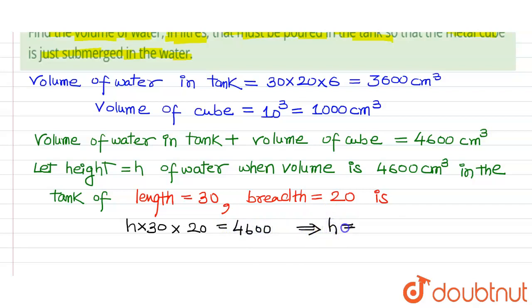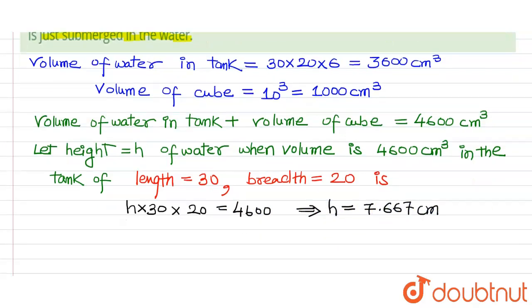So, we have h equals 7.667 centimeter when volume is 4600.